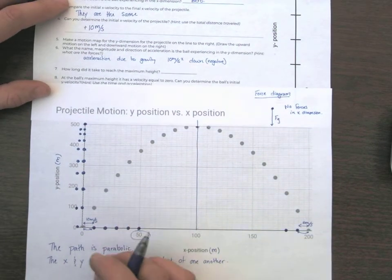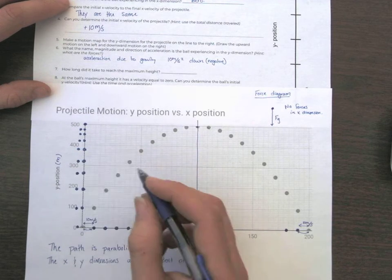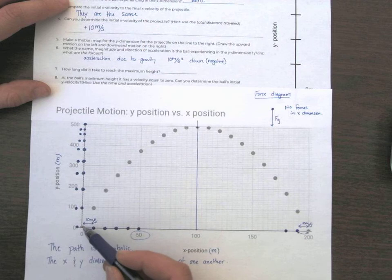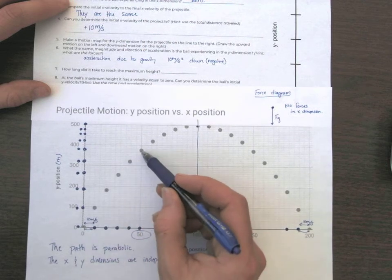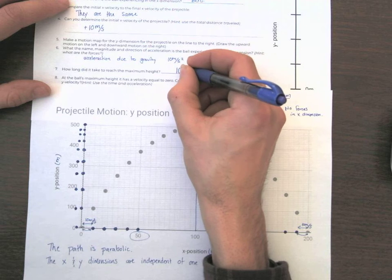Good. So we're seeing acceleration. We're seeing it's covering a different distance every single time. How long did it take to reach the maximum height? Let's just count. It took 1, 2, 3, 4, 5, 6, 7, 8, 9. It took 10 seconds. That's an easy one. Just count.